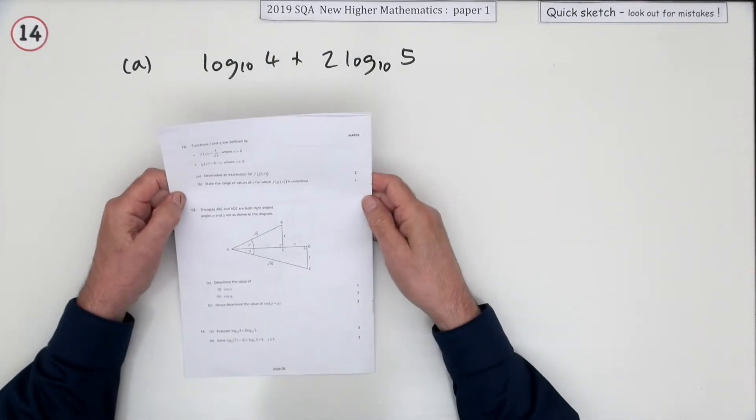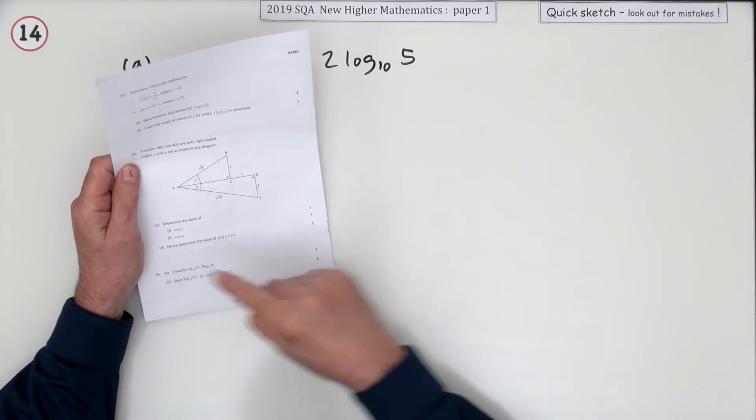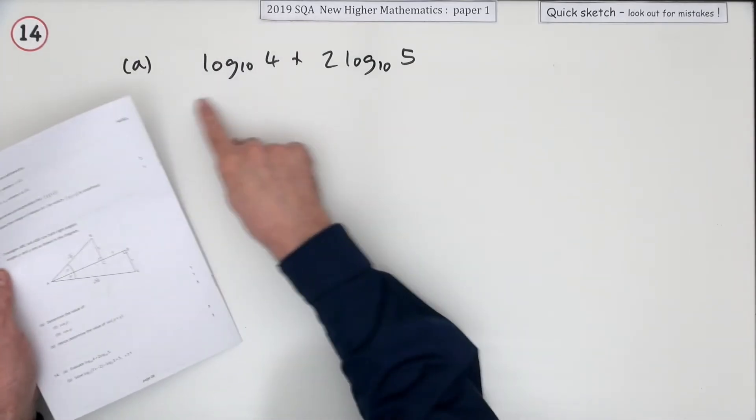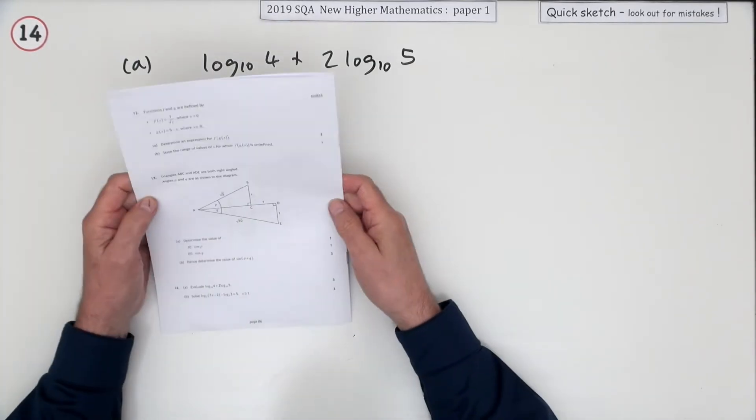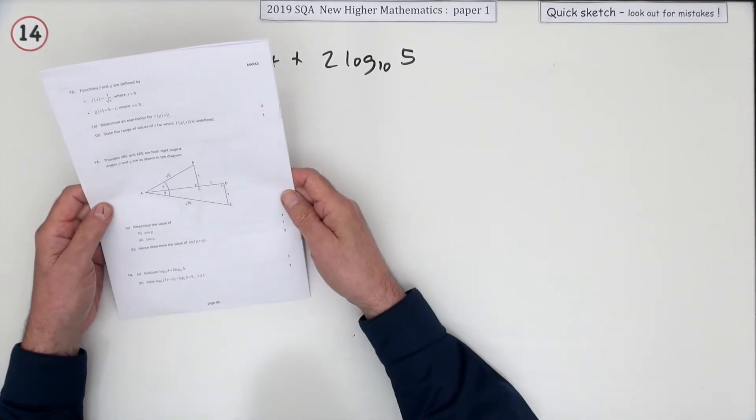Number 14 from the 2019 Higher Maths paper one. Logs, six marks logs question, and it's not that bad really. That's like the friendly face of logarithms when you just have numerical calculations to go through with them.